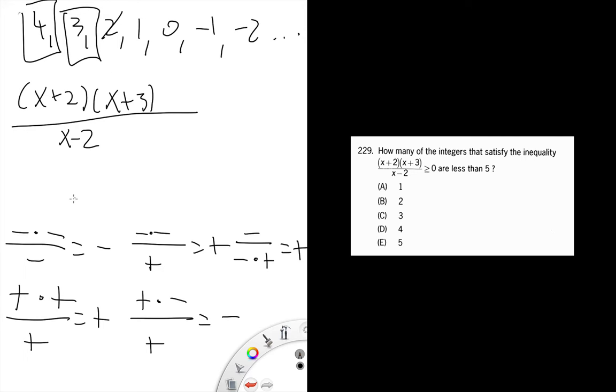One makes it so the top is positive, but the bottom is negative, so that's going to be negative. Same problem with zero, you end up with a positive top but a negative bottom. Same problem with negative one, you end up with a positive top but negative on the bottom, which yields negative overall.